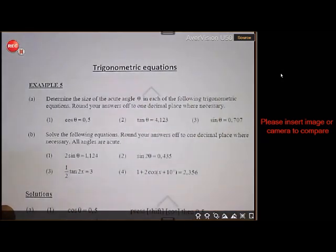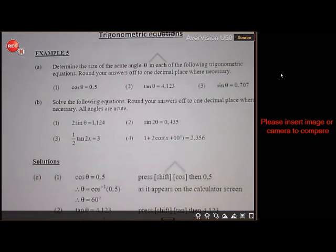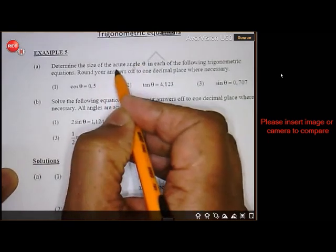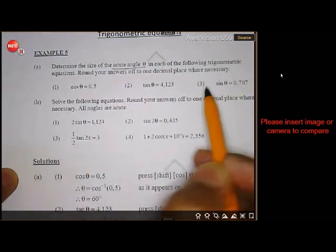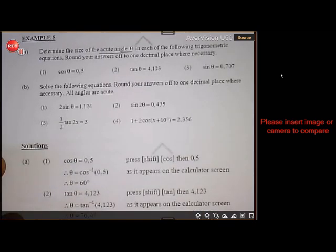Our new lesson is Trigonometric Equations, and let's see. If you look at the first example there, all these examples are from your textbook, by the way. If you must find the size of an acute angle theta, now that means all these angles are in the first quadrant, right?